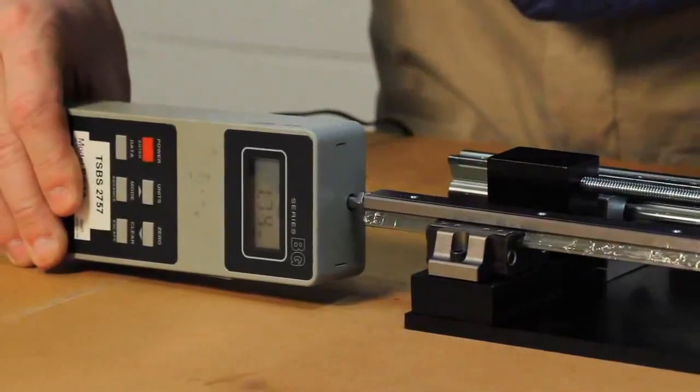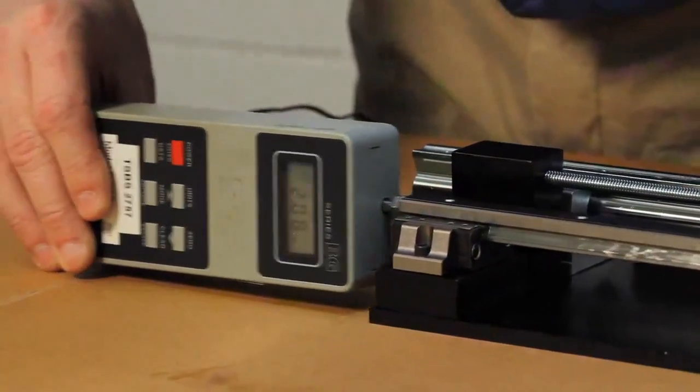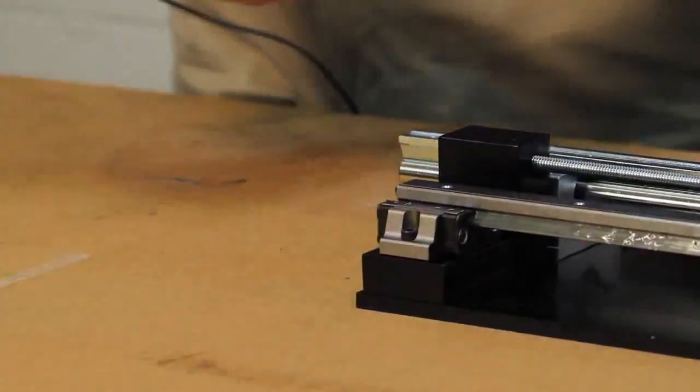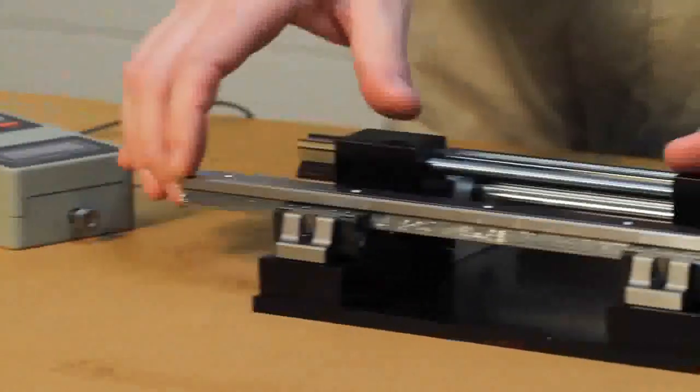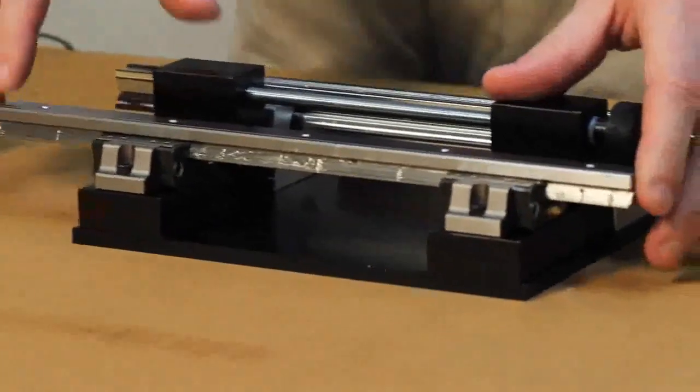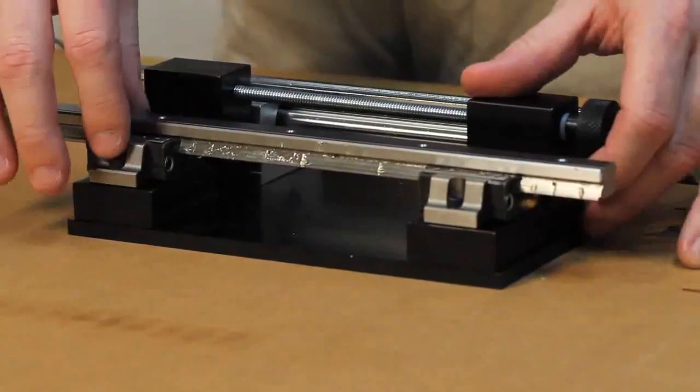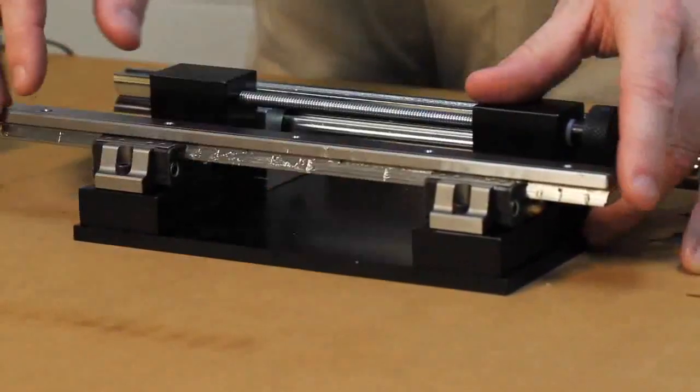So compare that to a square rail. Peak force of 2.08. So profile rail bearings are not self-aligning so we usually have a little bit more resistance. Also they're also commonly pre-loaded which is the case in both of these bearings.